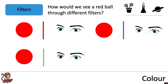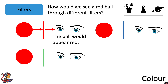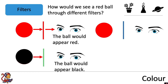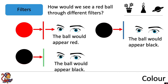Let's have a look at a red ball. Think about how you'd see a red ball through these different filters — feel free to pause the video. In the first scenario, a red ball through a red filter: the red ball reflects red light, which passes through the red filter, so the ball appears red. Through a green filter the ball would appear black, and through a blue filter the ball would also appear black.